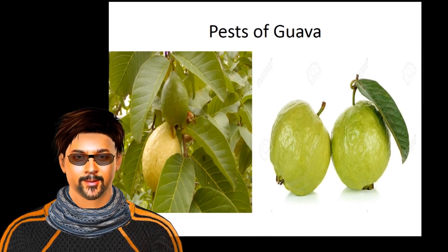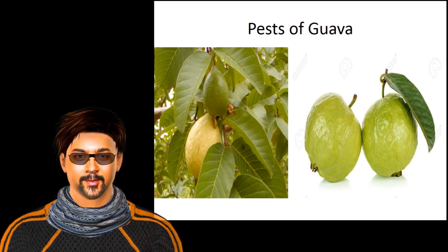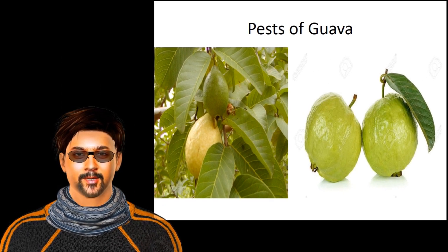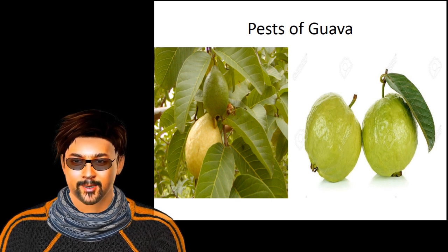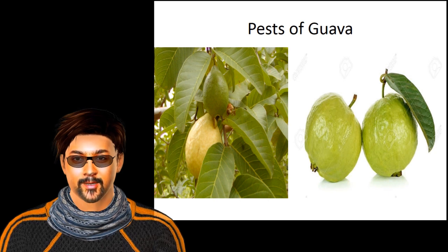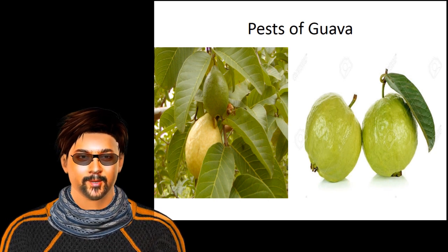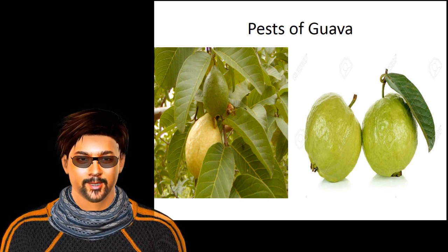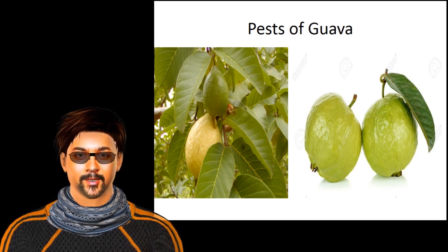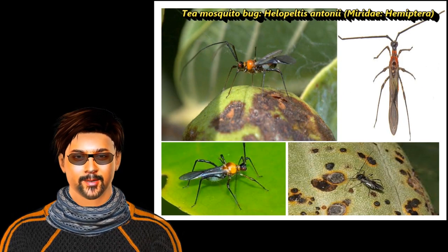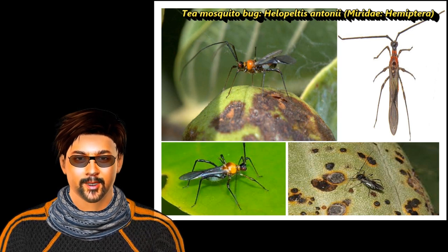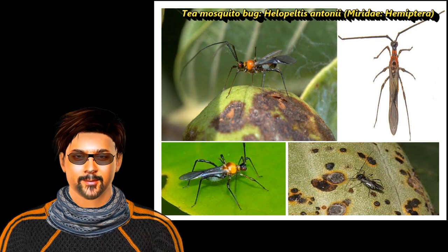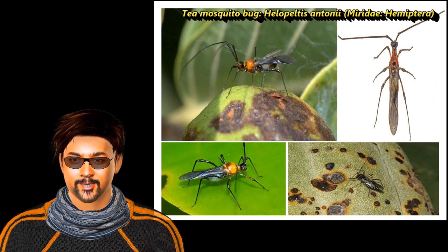This lecture is about pests of guava crop. There are two pest categories: one is sap feeder and another one is borer pest, which cause damage in a severe form. Let's see one by one. The first sap feeder is the tea mosquito bug, Helopeltis antonii, family Miridae, order Hemiptera.